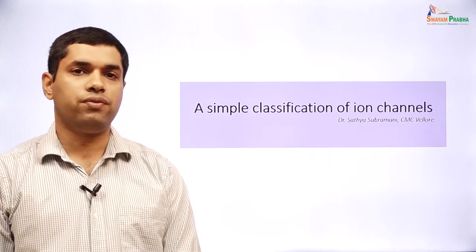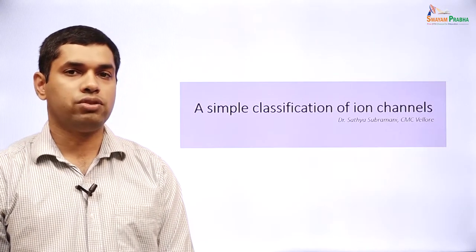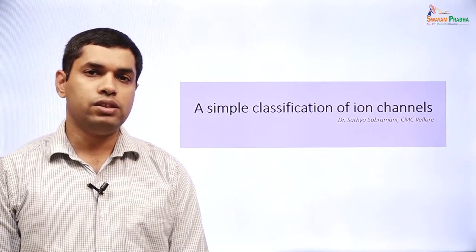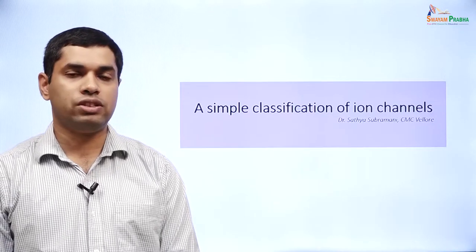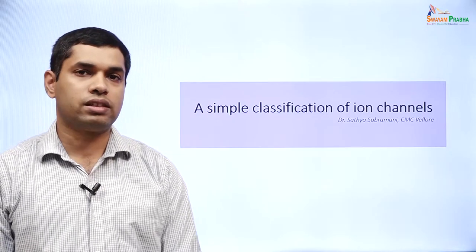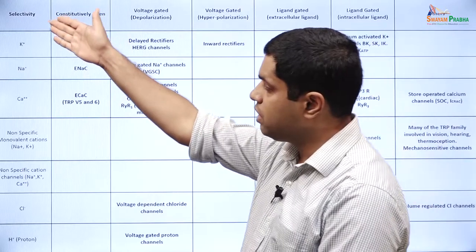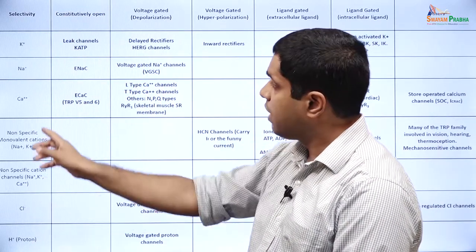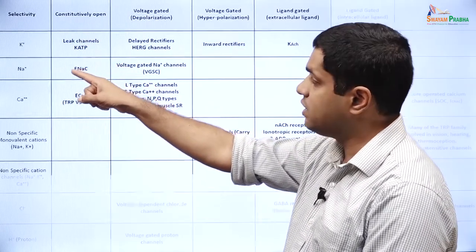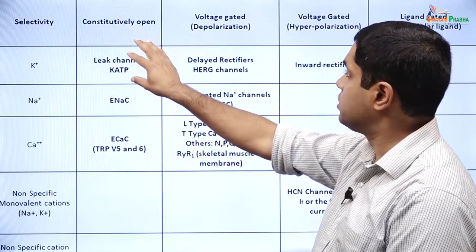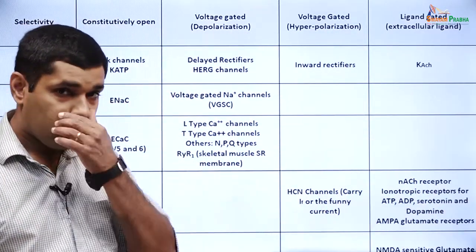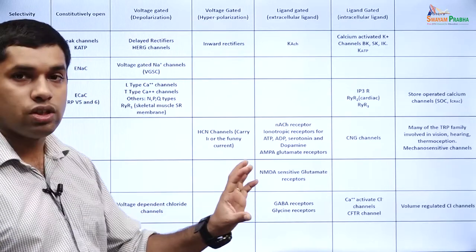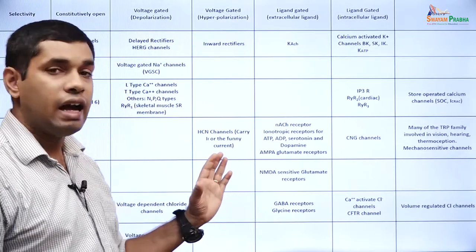We will now look at a classification of the different ion channels, put together by Dr. Satya Subramani. This covers most of the ion channels we come across while studying human physiology. In this classification, the ion channels or selectivity are shown in one column, and along the rows we have the different ways in which each ion channel is gated. For example, for potassium channels we have the open potassium channels which are constitutively open, voltage-gated by depolarization, or voltage-gated by hyperpolarization. This classification helps sort each ion channel in terms of both its selectivity and its gating.